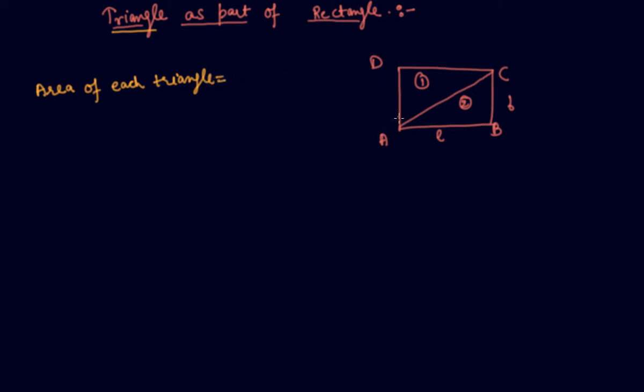as students, I am dividing the whole figure in two equal parts. So, the area of both the triangles will be equal, which will be half of the area of rectangle. Because we are dividing the rectangle into two parts by its diagonal.